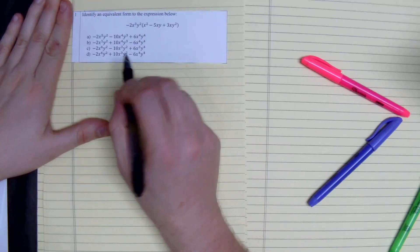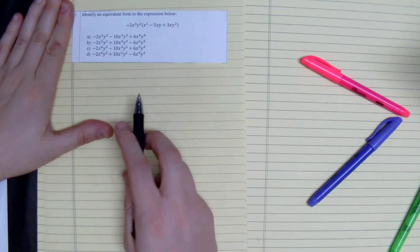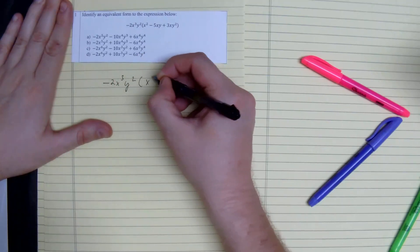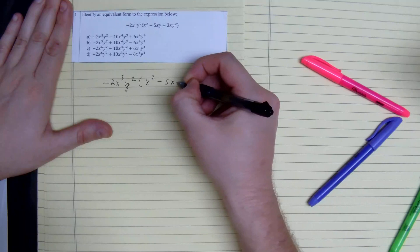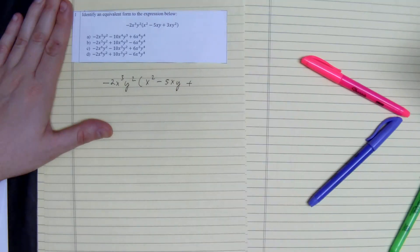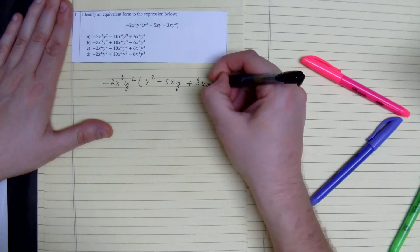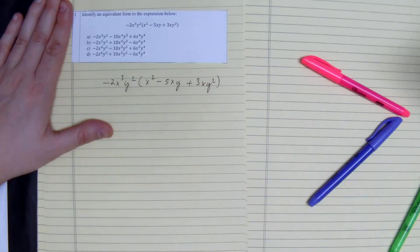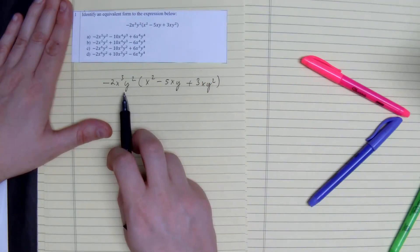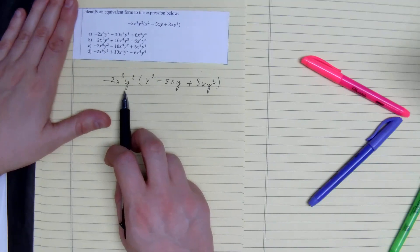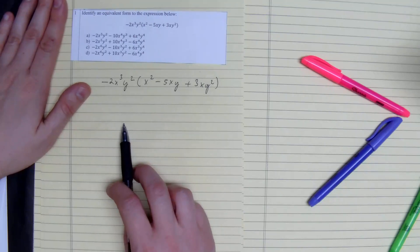It shouldn't be too bad, so when you distribute, you're just going to add the exponents as you go. So what we're going to do here, distribute.